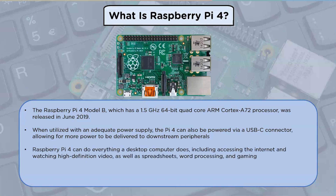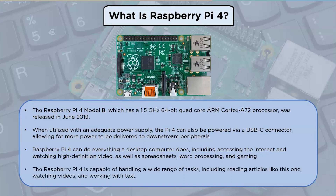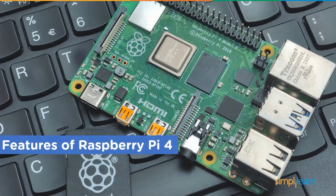Raspberry Pi 4 can do everything a desktop computer does, including accessing the internet, watching high-definition videos, working with spreadsheets, word processing, and gaming. The Raspberry Pi 4 is capable of handling a wide range of tasks including reading articles, watching videos, and working with text.